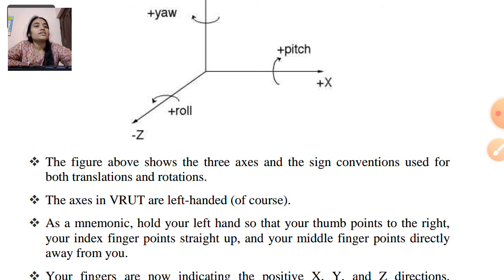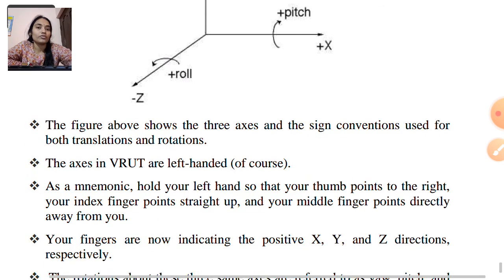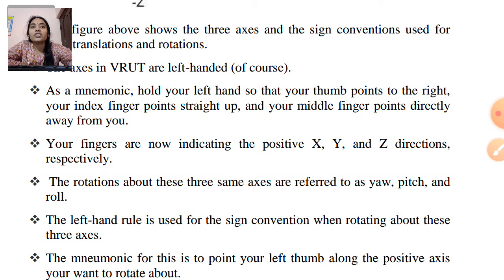The figure shows 3 axes and the sign convention used for both translation and rotation. These axes use a left-handed coordinate system. As a mnemonic, hold your left hand so that your thumb points to the right, your index finger points straight up, and your middle finger points directly away from you. Your fingers are now indicating the positive X, Y, and Z directions respectively.